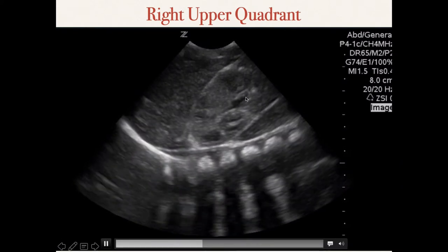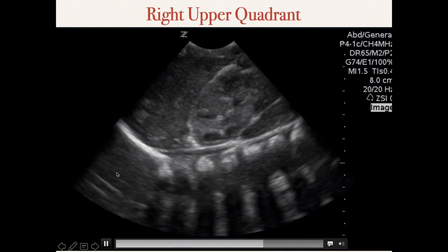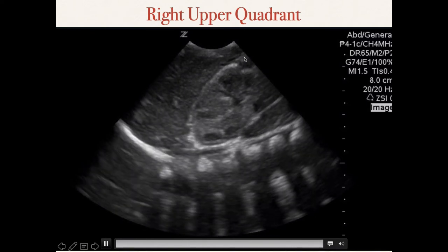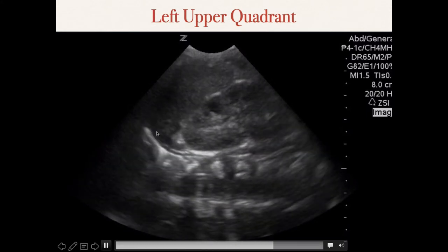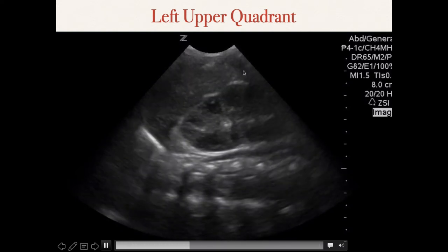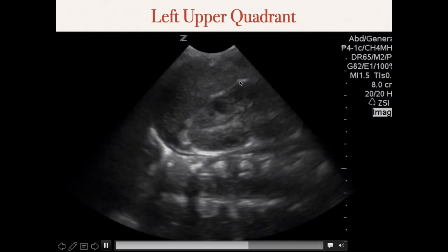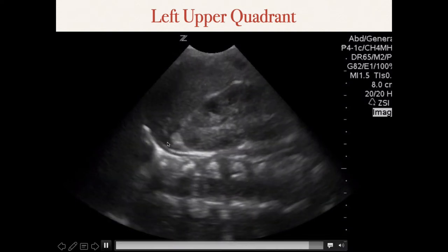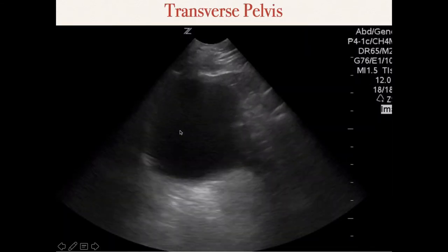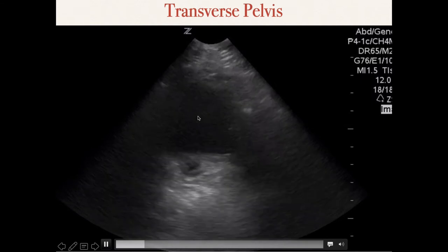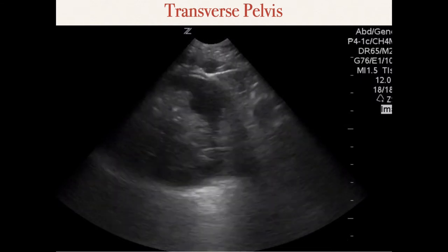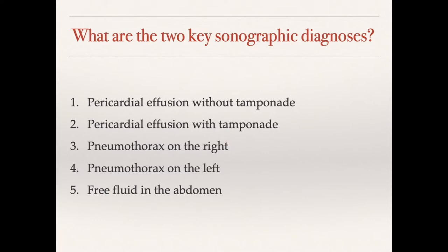Right upper quadrant shows liver, kidney, spine - no spine sign. The diaphragm ends right here, and there is no intra-abdominal fluid. Left upper quadrant shows spleen, kidney, spine, diaphragm - no spine sign, no hemothorax. Reviewing the bladder in transverse view, I'll call intra-abdominal fluid negative. So the two key sonographic diagnoses are pericardial effusion without tamponade and pneumothorax - on the right, it appears.